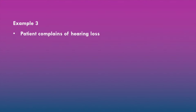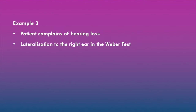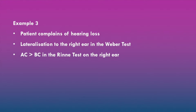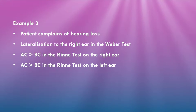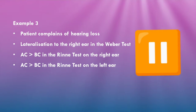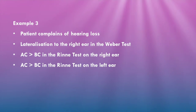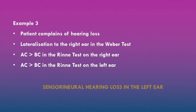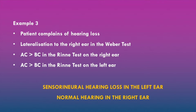In example three, we have a patient who complains of hearing loss. There is lateralization to the right ear in the Weber test. Air conduction is greater than bone conduction in the Rinne test on both the right and left ears. The likely diagnosis is sensorineural hearing loss in the left ear and normal hearing in the right ear.